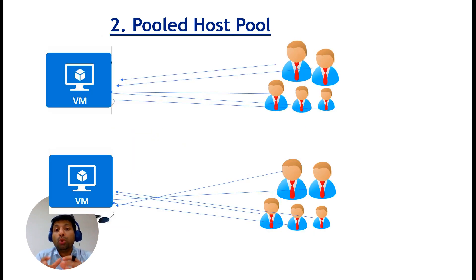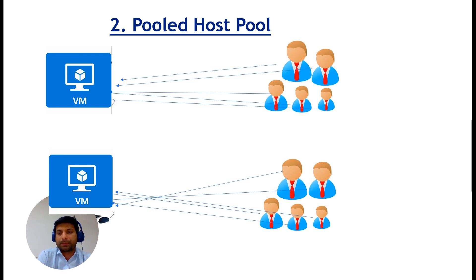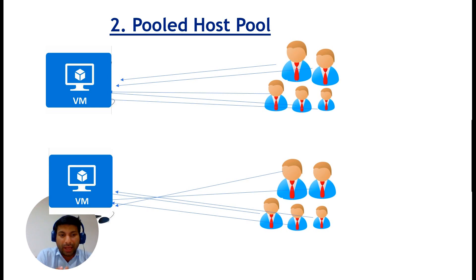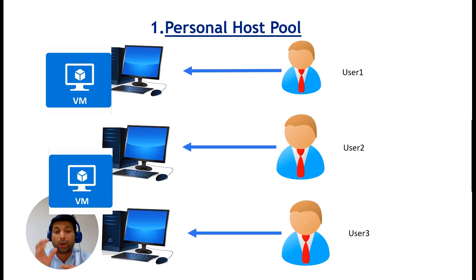The other type of host pool is the pooled host pool. As you can see, multiple users are logging into a single virtual machine. A multi-session operating system such as Windows Server, Windows 10 multi-session, or Windows 11 multi-user sessions are installed on these virtual machines, and new user connections are distributed across the session hosts. Generally speaking, for an average workload, it is more economical to spread many users across a smaller number of high-powered virtual machines in a pooled host pool than to host one-to-one user-to-virtual-machine in a personal host pool.